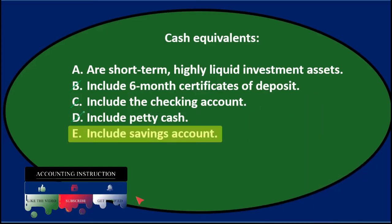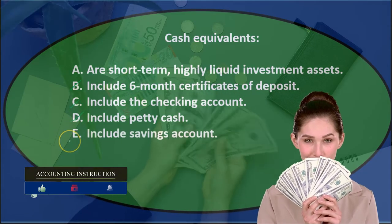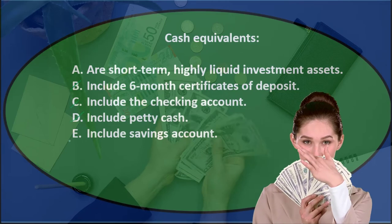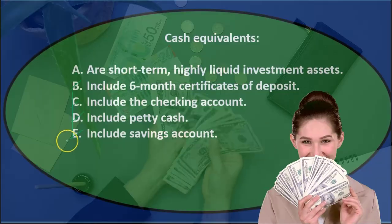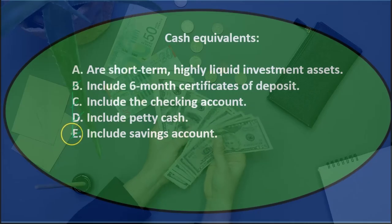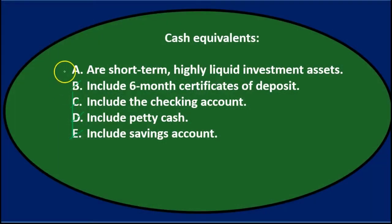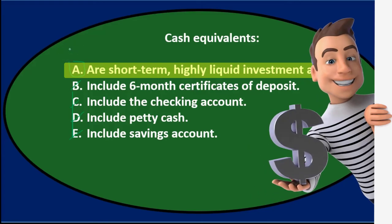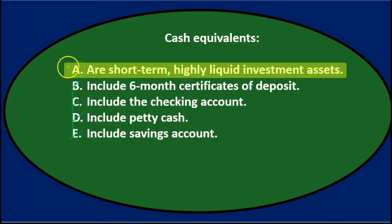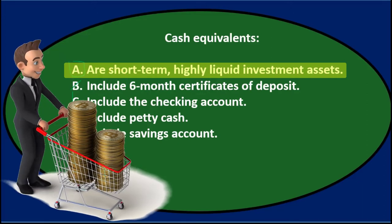E. The savings account — that's again a form of cash. As long as there are no restrictions on the savings account, it's a highly liquid account and would be part of cash, not a cash equivalent. This one could be close if there are restrictions, but the best answer here is A: cash equivalents are short-term, highly liquid investments. That's pretty much the definition of a cash equivalent.